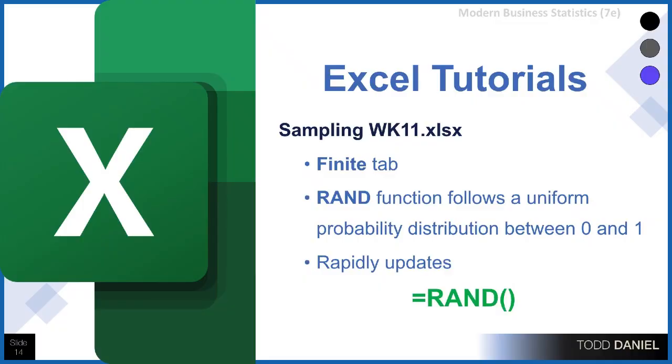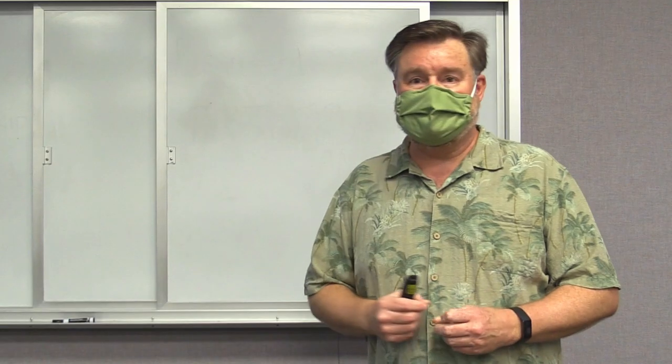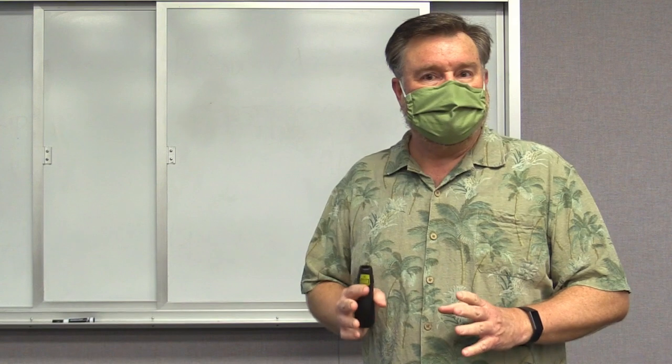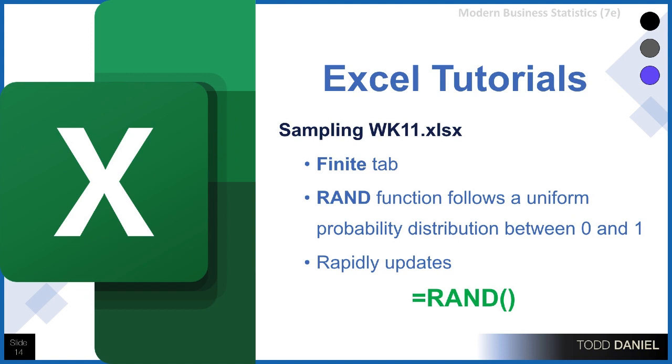Everyone had an equal chance of being selected for Tuesday or Thursday. To answer this question, we're going to use the sampling week 11 Excel file. The first tab says 'finite,' and that's for our finite population. We're going to use the RAND function. The RAND function follows a uniform probability distribution between 0 and 1. Keep in mind that the RAND function updates regularly — random numbers will recalculate whenever anything else changes in the spreadsheet.